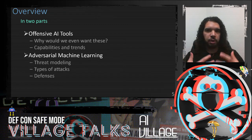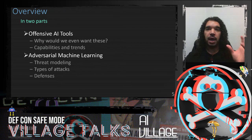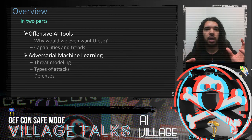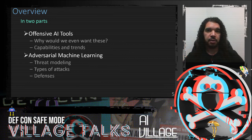The way I'm going to structure this talk is really in two major parts. The first is to talk about offensive AI tools — why do we want these, what's out there already, what are we seeing in the wild, how do we build them — and then adversarial machine learning, which is attacking the machine learning algorithms themselves.